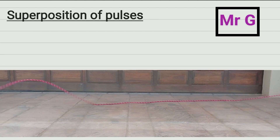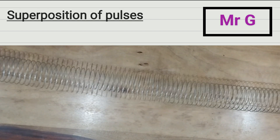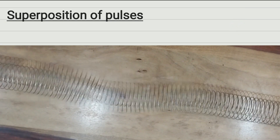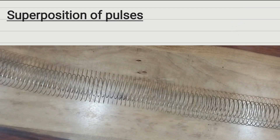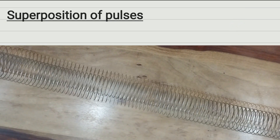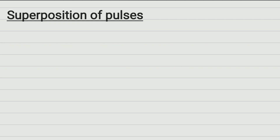Hello guys, Mr. G here. We're going to do the second lesson for pulses and waves — this is for Grade 10, Lesson 2. We're going to be talking about superposition of pulses. Last time we learned about the pulse, the medium, what is a pulse, different types of pulses and a medium.